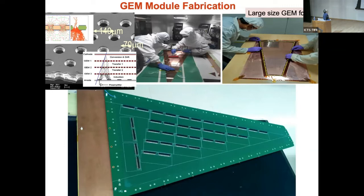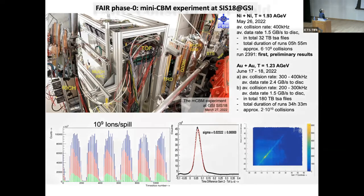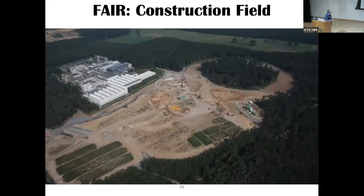Before FAIR starts, there is a Phase Zero program where all CBM detectors in small prototype form have been deployed at GSI. We placed two GEM chambers — instead of the final 130 — in a beam of nickel-nickel and gold-gold at 1.23 and 1.93 GeV per nucleon. The detectors show the beam-on and beam-off spill structure clearly, and the time correlation between GEM1, GEM2, and the time-of-flight detector built by Jagiellonian University is excellent — confirming the detectors work.